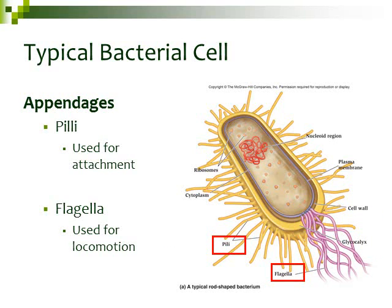Our last two structures are called the appendages. We have the pili — those are the short, yellow, hair-like structures all over the cell, and they're used for attachment, such as attaching to surfaces like our skin, our intestinal tract, or to a desk. The flagella are the purple, longer structures coming out the bottom of the cell, and those are used for locomotion — they help the cell move around in the environment.